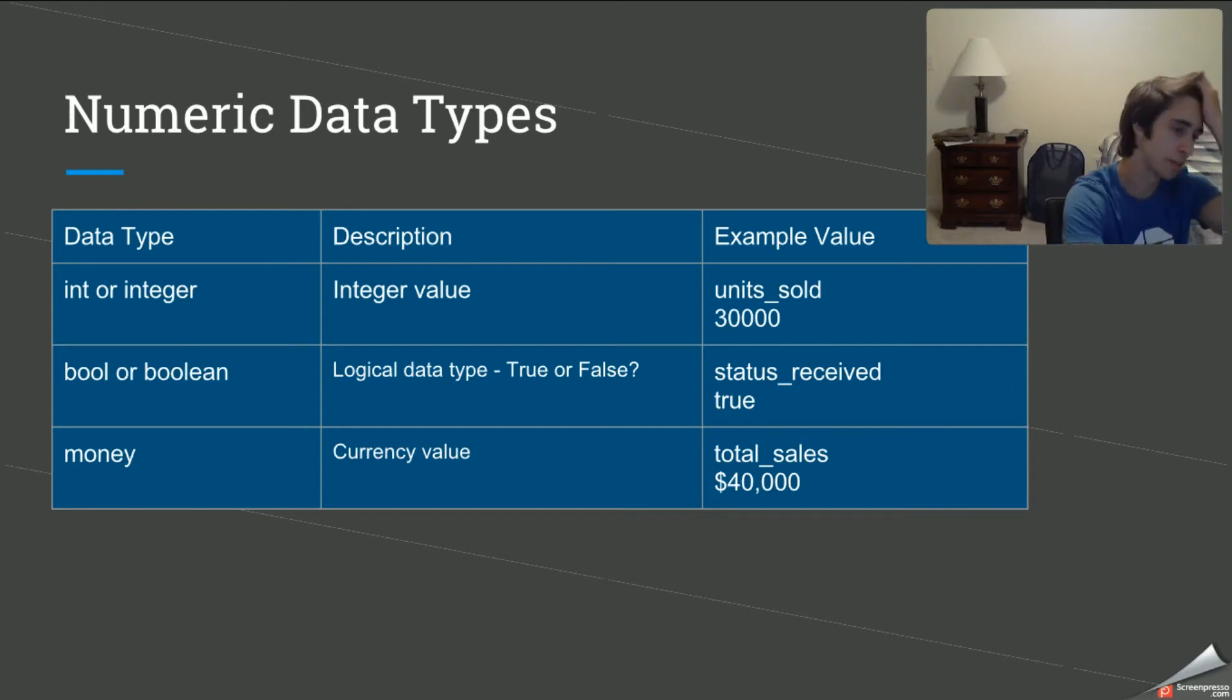Next up we're going to look at money. So this is probably more professional to use if you're doing something related to currency value. So for example, for our total sales, if we were listing the revenue that those sales generated, we would probably use a money value or a money data type. Those are about 80% to 90% of what you guys are going to be using when you're making tables at a beginner's level.